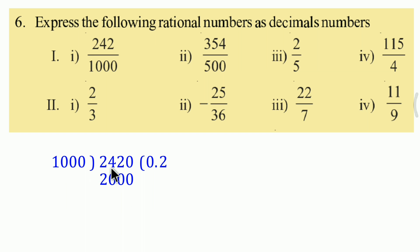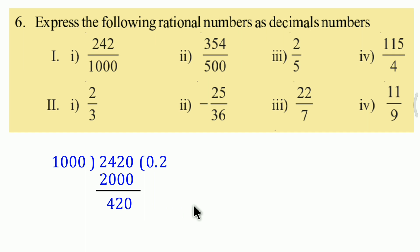Continuing the division, 2420 divided by 1000 gives quotient 2, then remainder 420, then 4200 and so on. After completing the division, the answer is 0.242.